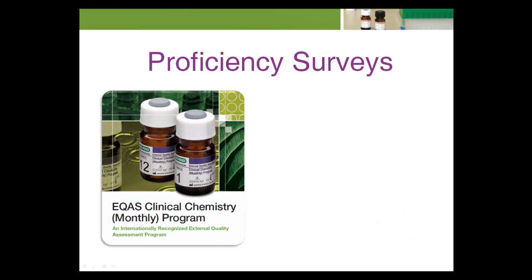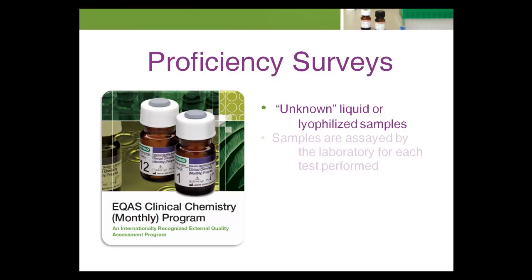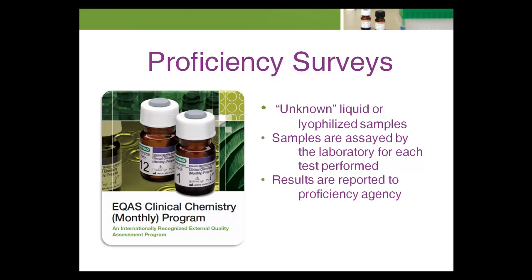Laboratories participating in a proficiency testing program receive a set of unknown liquid or lyophilized samples. The samples are assayed by the laboratory for each test performed. Results are obtained and reported to the proficiency agency. The agency collects the data and, using various statistical models, determines what the consensus value of the unknown sample should be for each test. Then the test result reported by each laboratory is compared to this consensus value, and the laboratory is graded for accuracy.